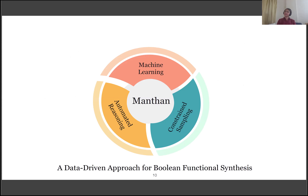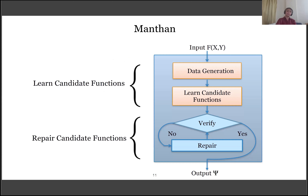One thing I would like to emphasize here is that, unlike traditional Skolem approaches, Manthan learns approximate candidate functions. Manthan takes f, the specification, as its input. It first generates the data. With the help of that data, it learns the approximate candidate function. Manthan is a sound system — it verifies whether the candidate functions are Skolem functions. If the candidate passes the verification check, then only Manthan outputs the Skolem function ψ. Otherwise, the candidate needs to undergo a repair iteration.